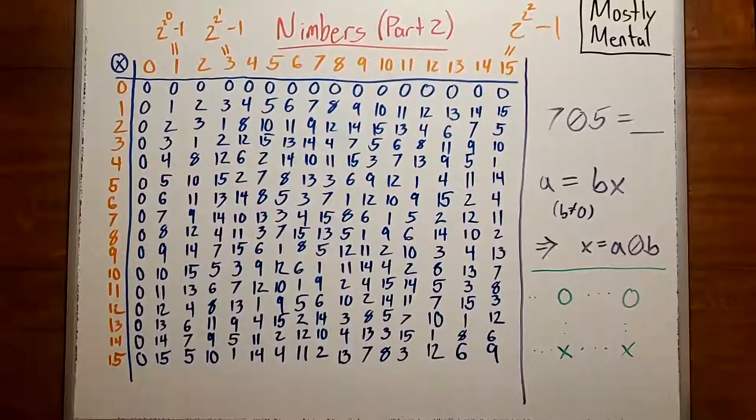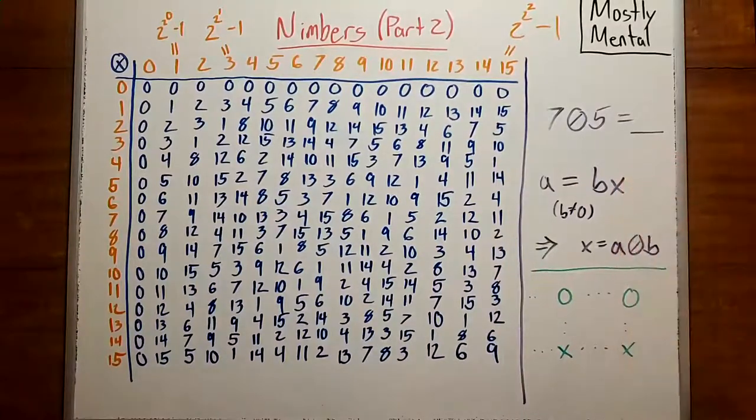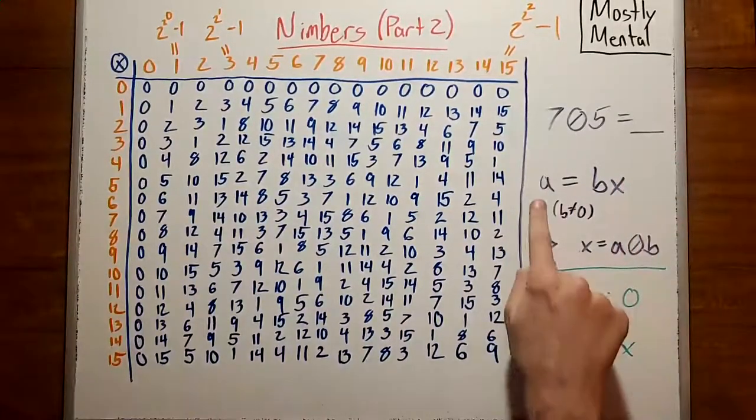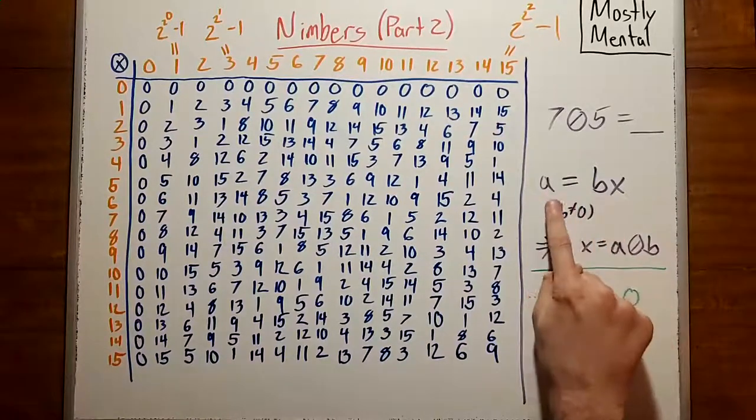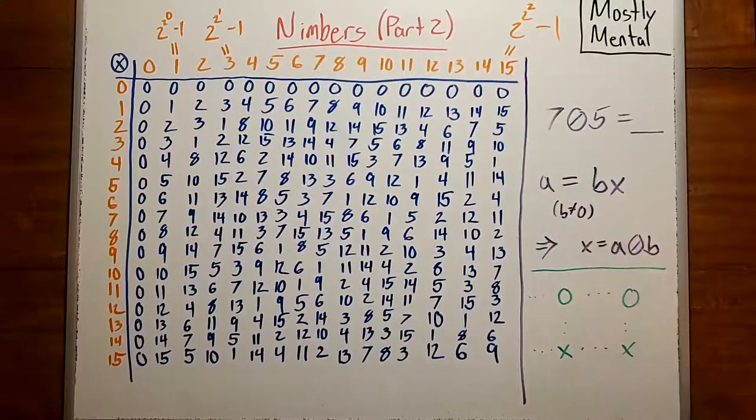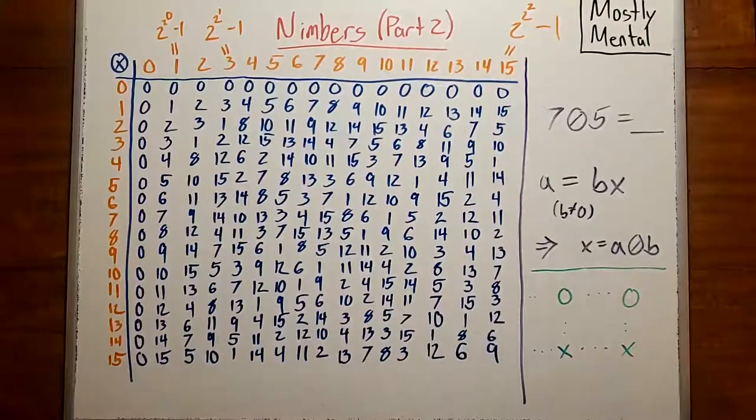A natural question we might ask, if we have multiplication, is whether there's division, too. That is, if we have two nimbers, a and b, is there some number x so that a equals bx? And it turns out the answer is yes. We can always divide two nimbers. To see why,